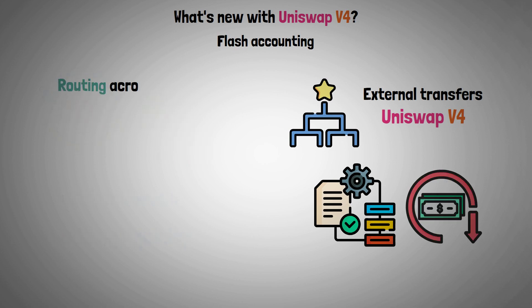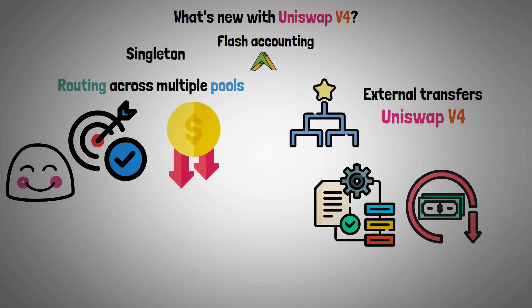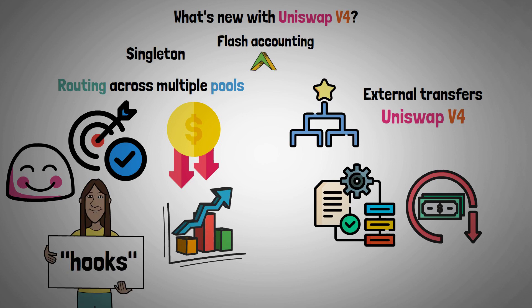Routing across multiple pools is made more effective and affordable by Singleton and Flash Accounting. This benefit is particularly helpful given that the introduction of Hooks would increase the number of liquidity pools.